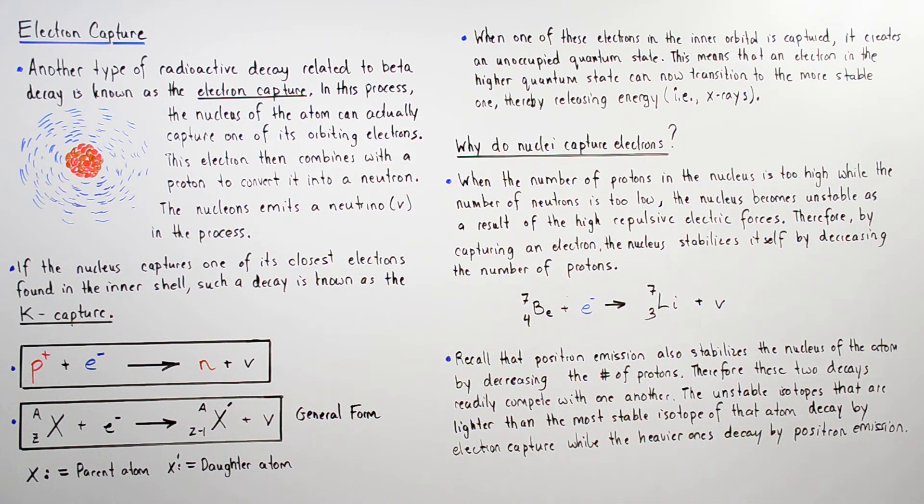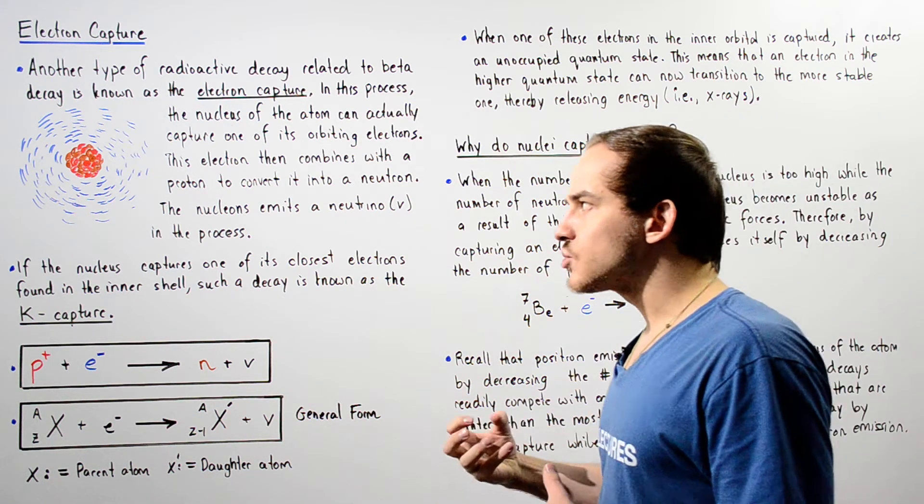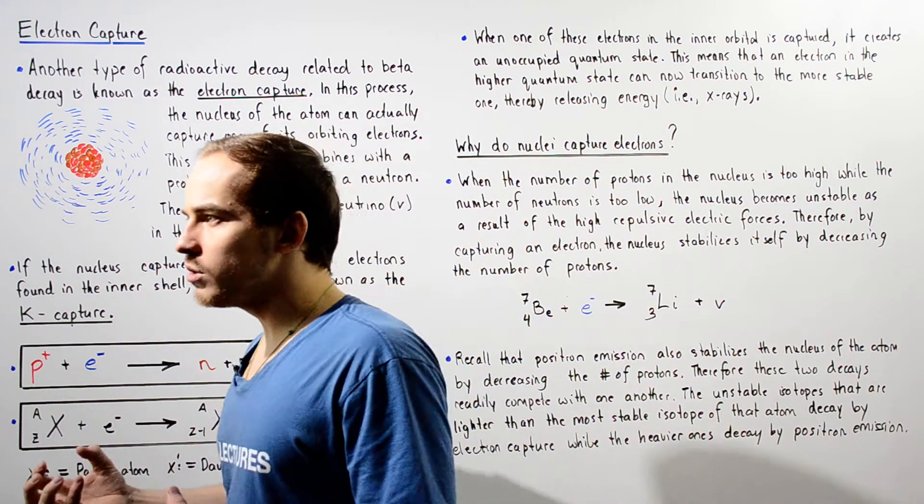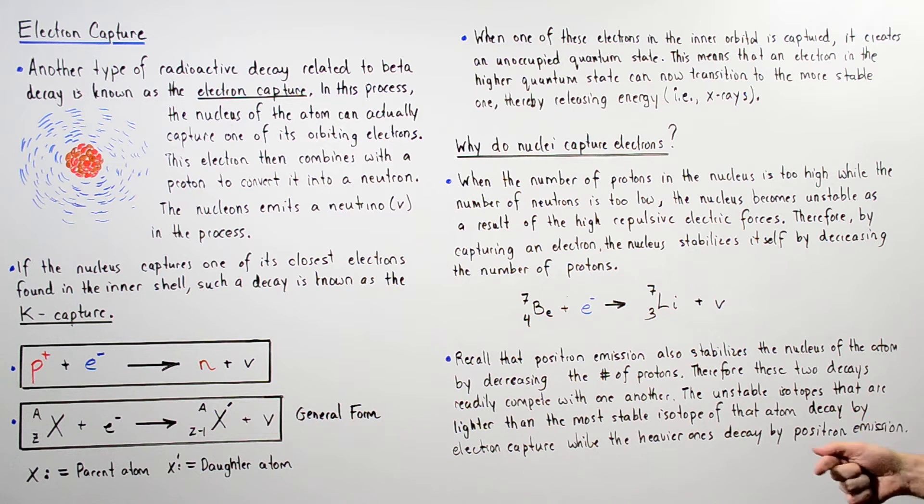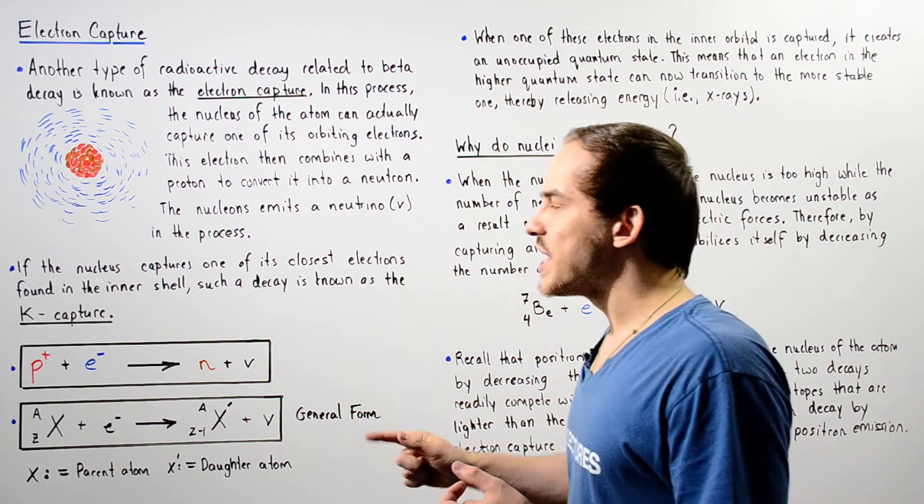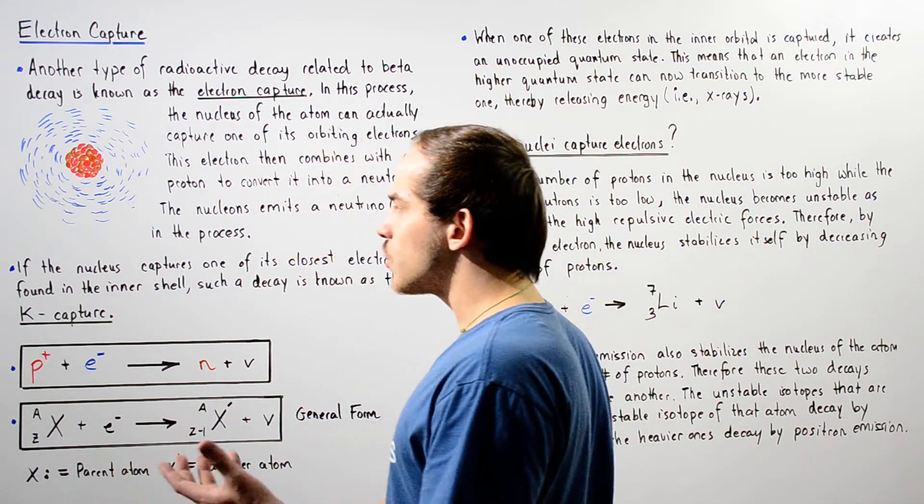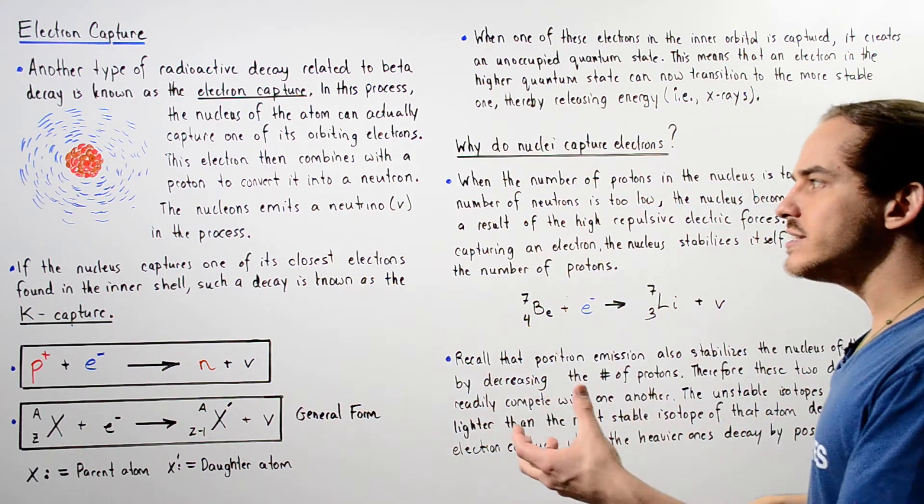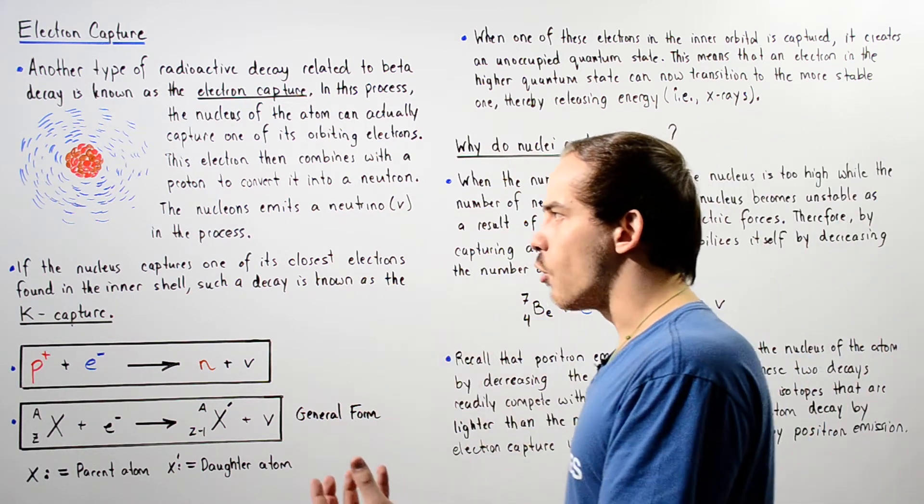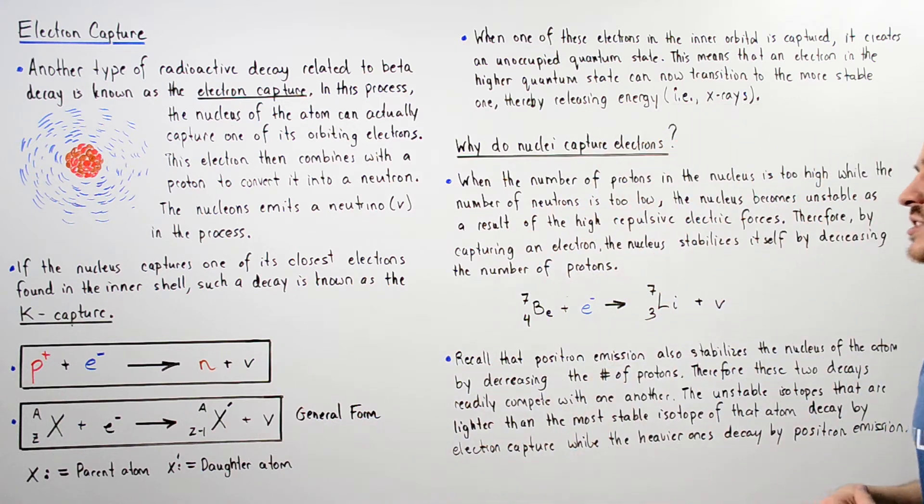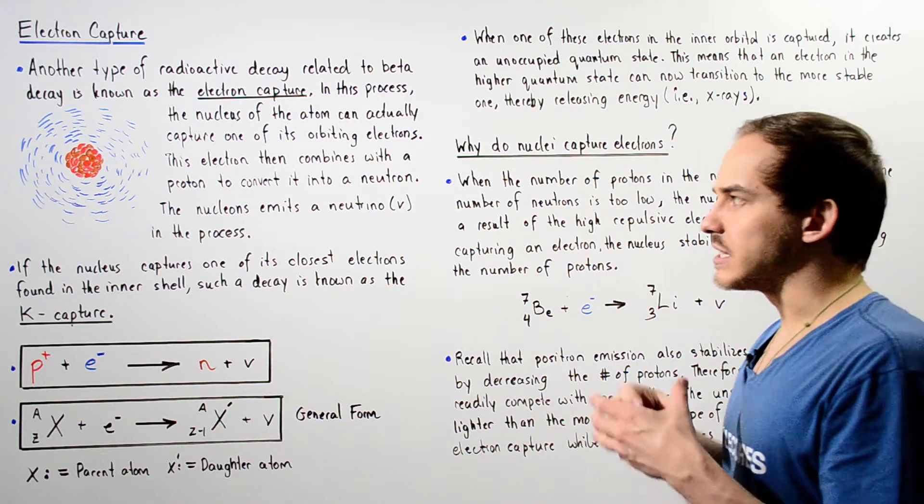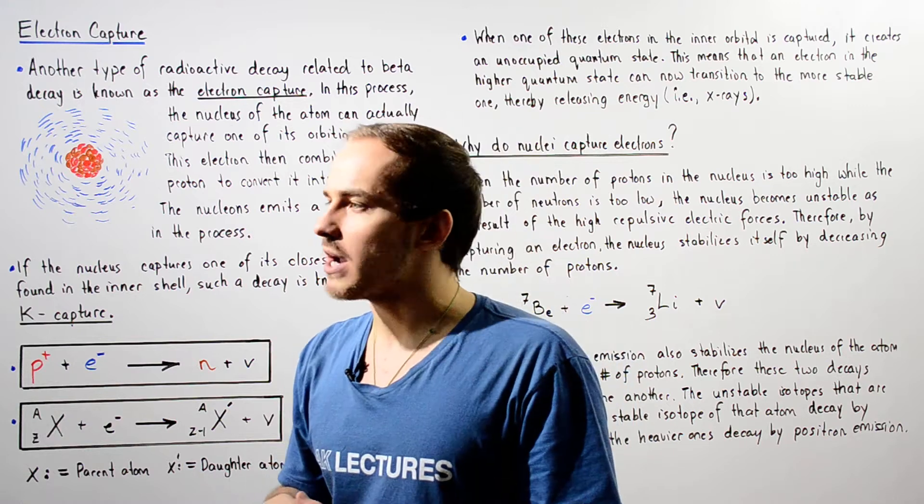Now that basically means that if our electron is captured by the nucleus and it combines with the proton, by decreasing the number of protons in the nucleus and increasing the number of neutrons in the nucleus, that increases the strong nuclear forces and decreases our electric repulsive forces, thereby stabilizing that nucleus of our atom.